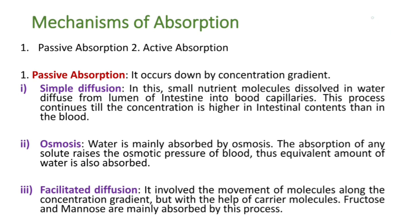Now coming to the mechanisms of absorption. Absorption occurs by two processes: first is passive absorption and second is active absorption. Passive absorption occurs down the concentration gradient, meaning it continues till the concentration on both sides equalizes. It occurs by physical processes such as simple diffusion, osmosis, and facilitated diffusion.